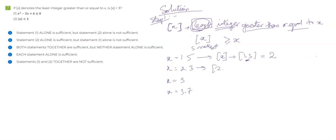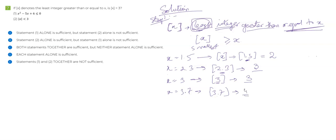Now let's look at box of 2.3. Once again, I cannot take 2.3 because I'm looking for an integer that should be greater than this and be least — so obviously the value has to be 3. What about an integer itself? If I have, say, x = 3 itself — box of 3 — I'm looking for an integer. Is 3 an integer? Yes. Can I take an integer equal to x? Yes. So box of 3 will be 3. And box of 3.7 will be the next integer, that is 4.